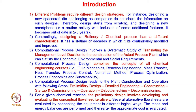Computational process design primarily leads to plant construction and operation with the following steps: preliminary design, detailed engineering, construction of the plant, startup and commissioning, operation of the plant, de-bottlenecking through continuous improvement, and finally decommissioning at the end of service life. Preliminary design is extremely important because it leads to decisions that shape the rest of the plant's lifecycle.